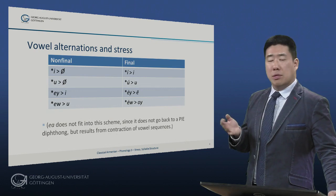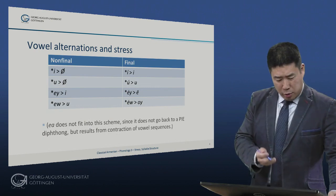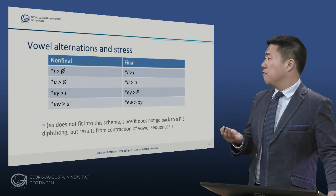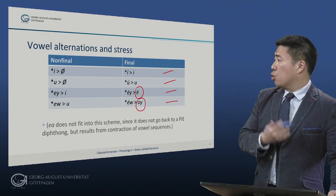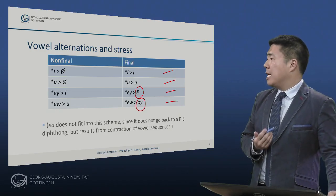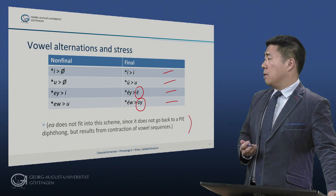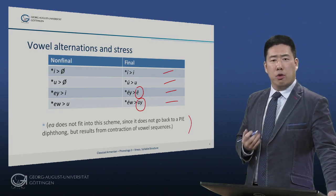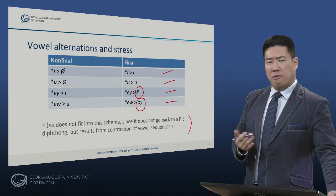Here we have a table that shows these alternations according to the communis opinio, the opinion of most scholars. We have retention of these vowels and diphthongs in final position: i, u, ei (which became ei), and eiu (which became oi). But in non-final position, i and u were weakened to zero, and ei and eiu were weakened to i and u respectively. Ia does not fit into this scheme since it does not go back to a single Proto-Indo-European diphthong but arose in the prehistory of Armenian from contraction of various vowel sequences.